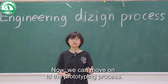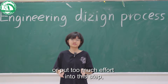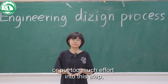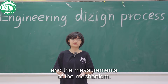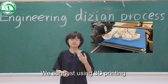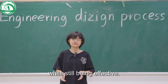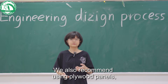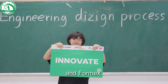Now we can move on with the prototyping process. Remember, you don't need to use fancy materials or put in too much effort into this step. Rather, focus on the shape and the measurements of the mechanism. We suggest using 3D printing to help reduce the cost and effort while still being effective. We also recommend using plywood panels, MECA plastic sheets, and Formex.